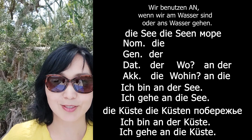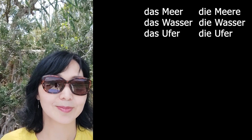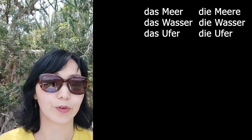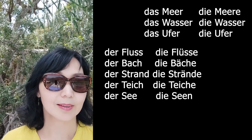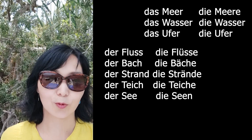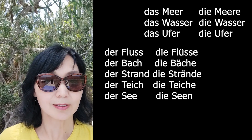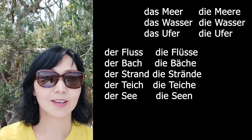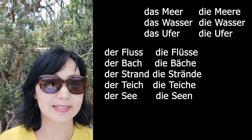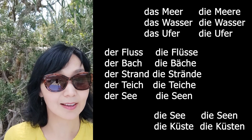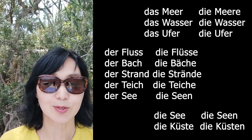Итак, пробежимся по всем сегодняшним словам. Слова среднего рода: das Meer, das Wasser, das Ufer — берег. Слова мужского рода: der Fluss — река (Flüsse), der Bach — ручей (Bäche), der Strand — пляж/берег, der Teich — пруд, der See — озеро. Слова женского рода: die See — море, die Küste — побережье.